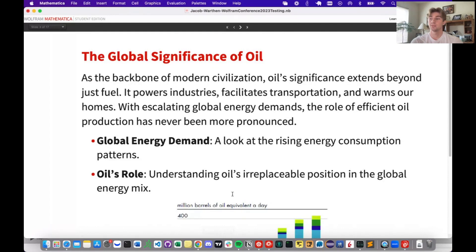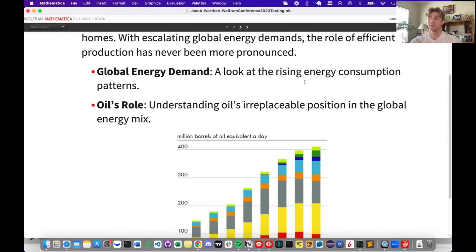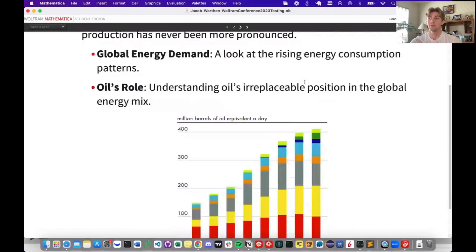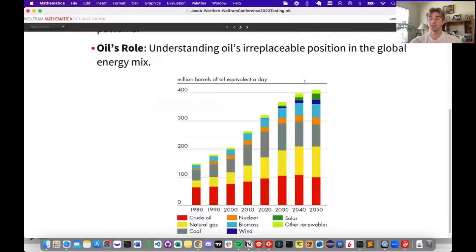Often hailed as the black gold, oil isn't just the backbone of modern civilization, it's its lifeblood. Yes, we all know it fuels our cars, but its reach is so much more expansive. Industries depend on it, transportation networks are built around it, and on cold nights, it's what warms many of our homes. With the ever-intensifying surge in global energy demands, the spotlight on efficient oil production intensifies. This plot delineates it starkly. Even as we diversify energy sources, the sheer volume of oil consumption juxtaposed against other sources underscores its irreplaceable position in our global energy mix.